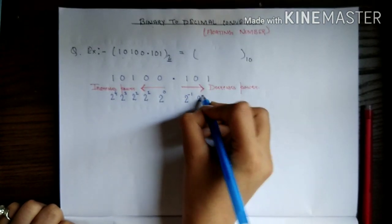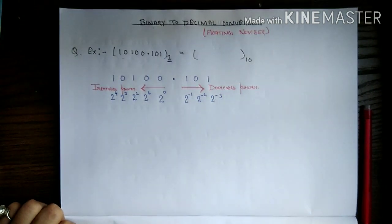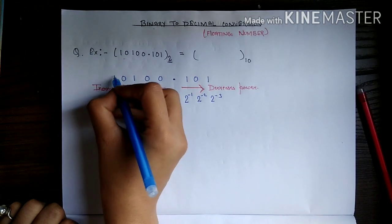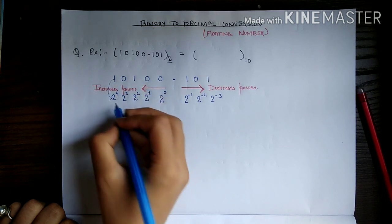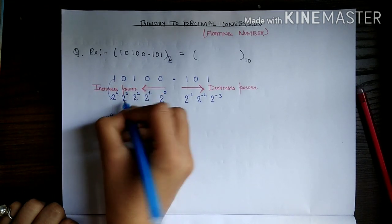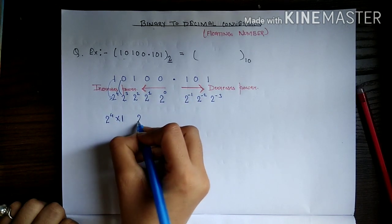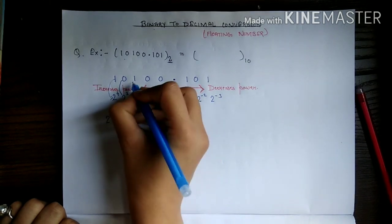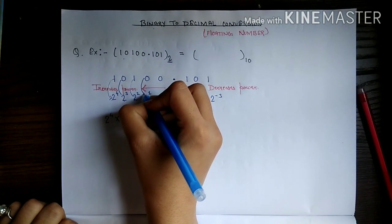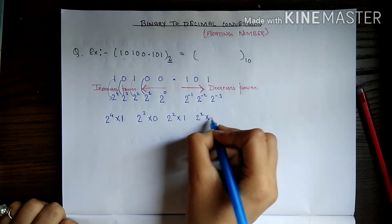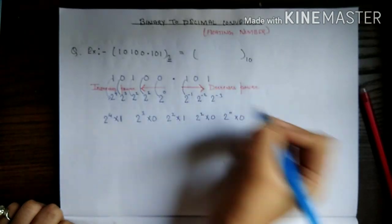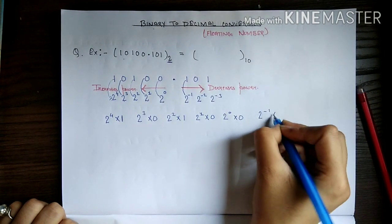Now we multiply each digit by its corresponding power. So: 2 to the power 4 into 1, 2 to the power 3 into 0, 2 to the power 2 into 1, 2 to the power 1 into 0, 2 to the power 0 into 0, and 2 to the power minus 1 into 1.